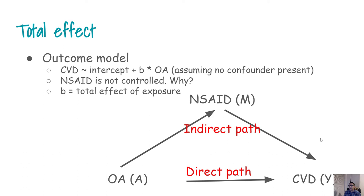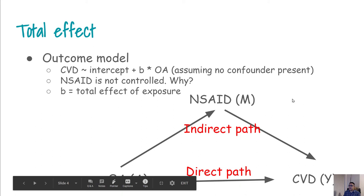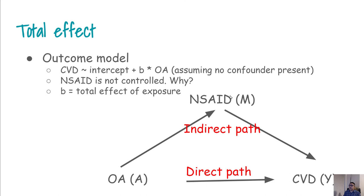Simply we can run a regression where CVD is the outcome and OA is the only independent variable. When we run the regression we will get an intercept term, a slope term, and obviously we are running this regression under the assumption that there is no confounder present. Notice that in this regression we are not really adjusting for any mediator or NSAID.